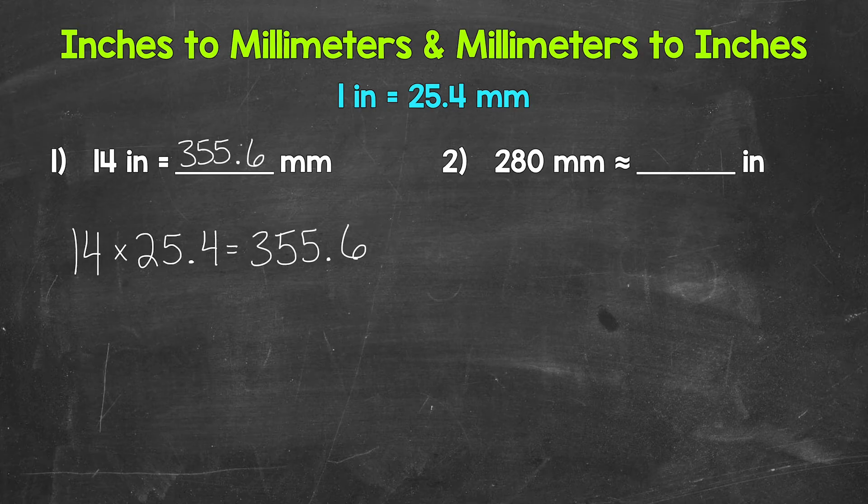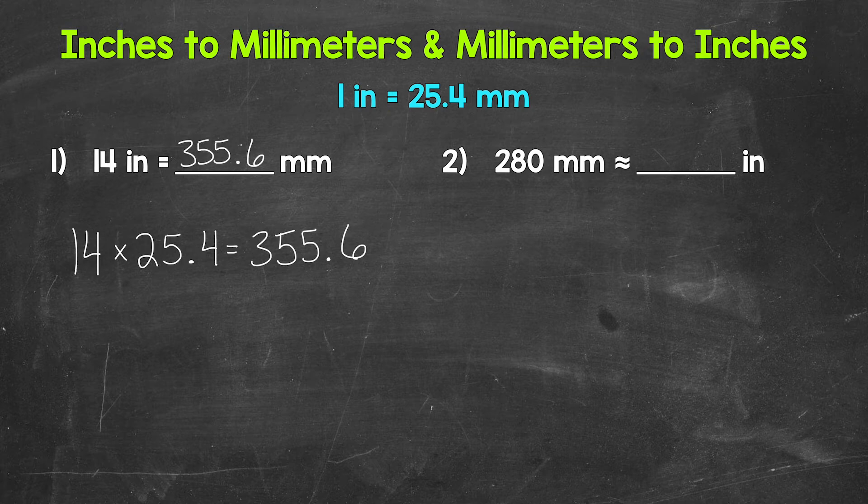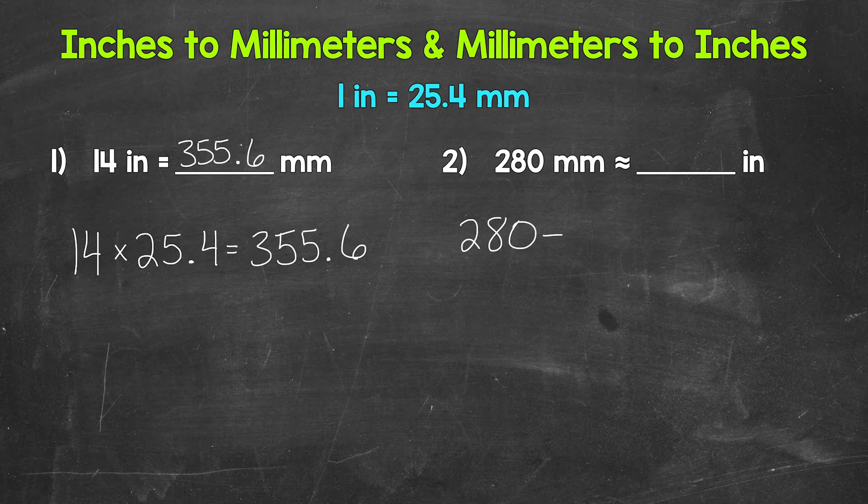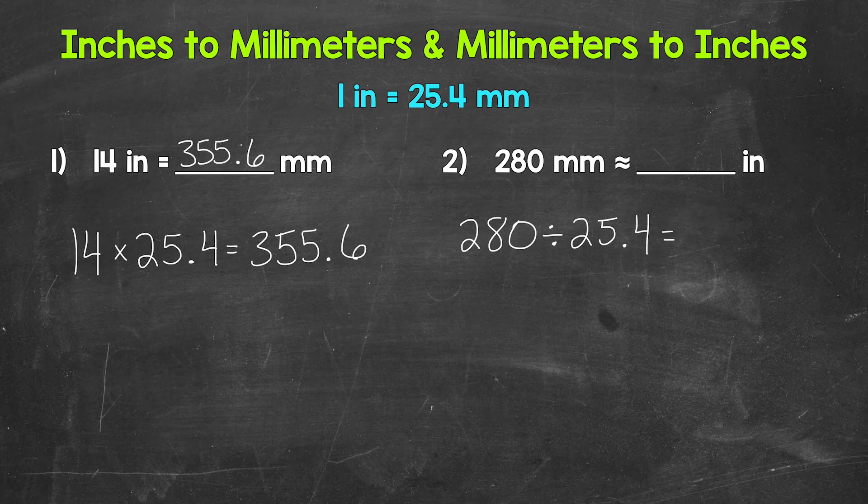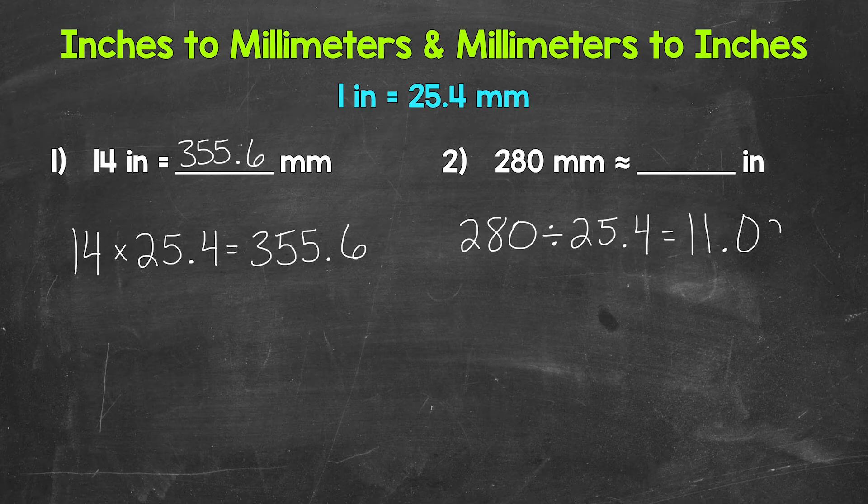So we're going from millimeters to inches. Well, each group of 25.4 millimeters equals one inch. So how many groups of 25.4 millimeters in 280 millimeters? We need to divide - 280 divided by 25.4. When we convert from millimeters to inches, we divide by 25.4. Now, 280 divided by 25.4 gives us 11.023...